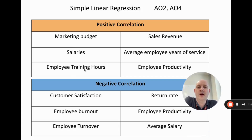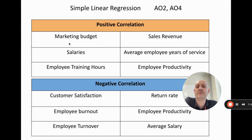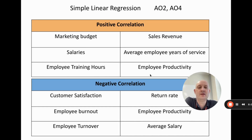Here are more business examples of positive and negative correlation. For positive: as we spend more on marketing, we would expect higher sales revenue — otherwise what's the point of spending the money? As salaries go up, we would expect employees to stay at the business longer, so average years of service would increase. And if we have more hours of training, employee productivity — the number of things they're producing — should also go up.